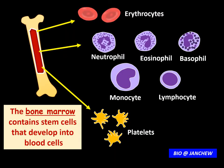Here is a picture of the bone marrow, which contains undifferentiated cells called stem cells that can differentiate to produce blood cells — such as erythrocytes, all types of white blood cells, and platelets. The bone marrow is very important for the synthesis of blood cells.